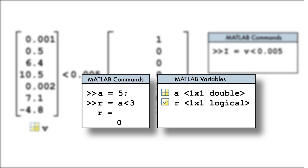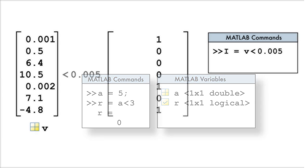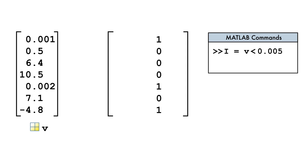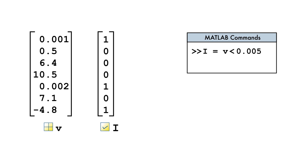Recall that using a logical operator with two scalars results in a logical variable that has a value of either true or false. Thus, the result of the command v less than 0.005 is a logical array i, in which every element is either true or false.